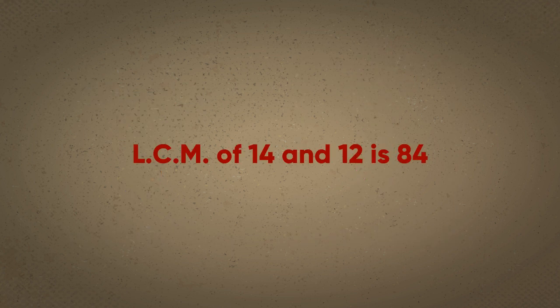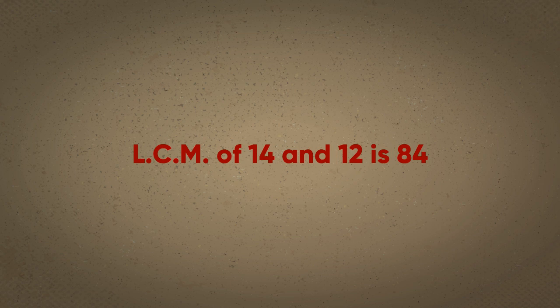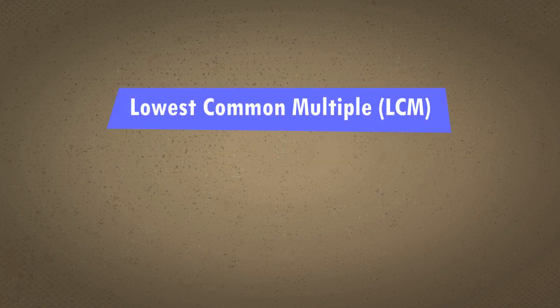The least common multiple of 14 and 12 is 84. So, they will exercise together again in 84 days. Lowest common multiple, in short, LCM.